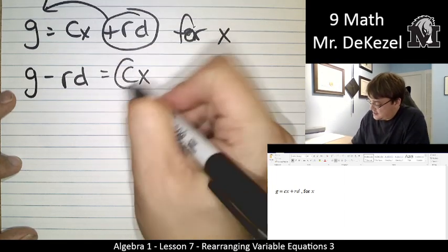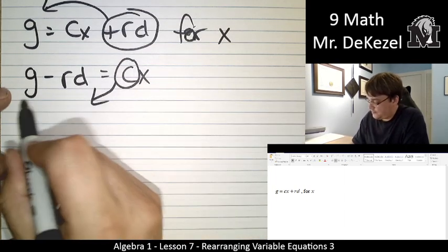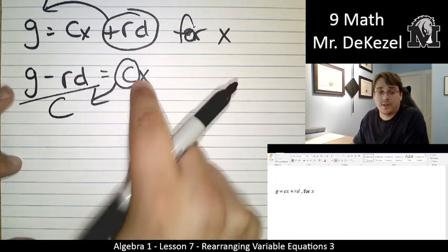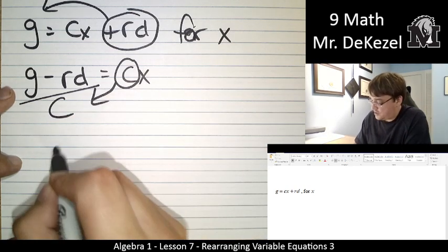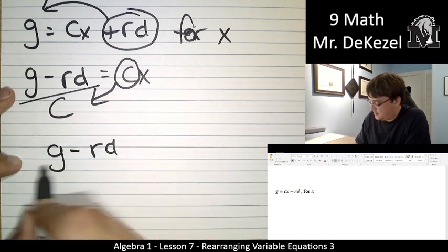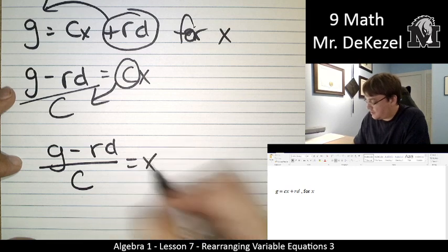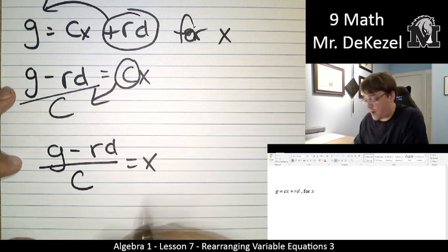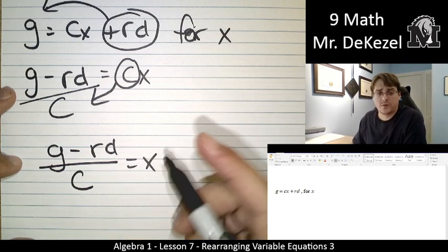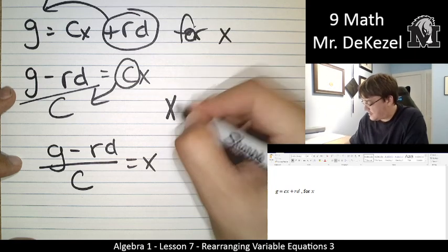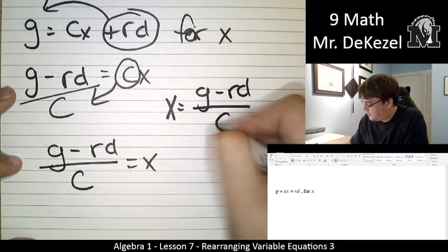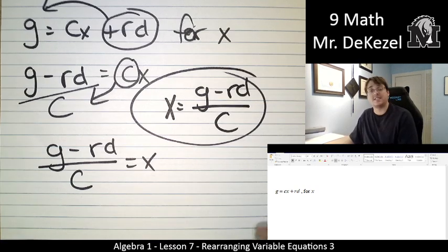And then we take the c and we move it to the bottom. Right. It's multiplied on one side. It's divided on the other. We're left with g minus rd divided by c is equal to x. We're almost done. We want to flip it around. We like our variable that we're solving for on the left. So x is equal to g minus rd all divided by c.